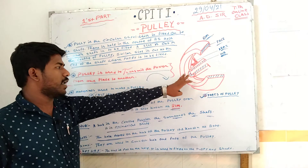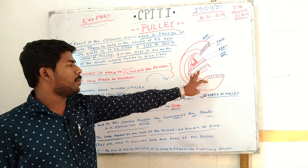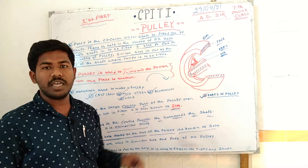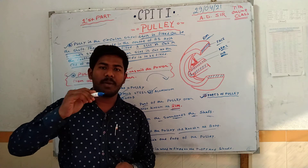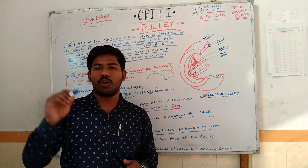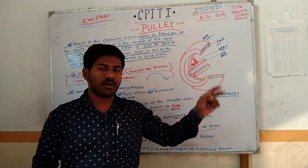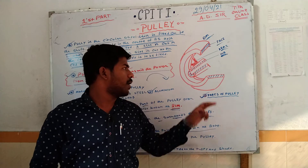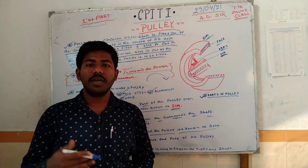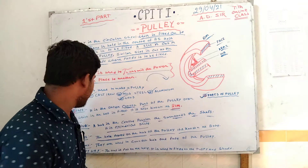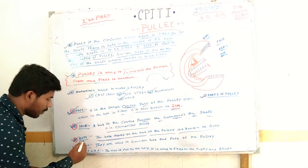The cross-section area of the hub is called the bore. The bore is the inner cylindrical hole through the hub. This cross-section is called the bore. Next is the arm.